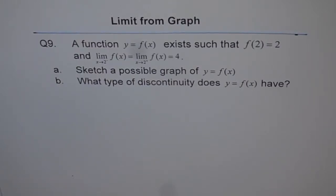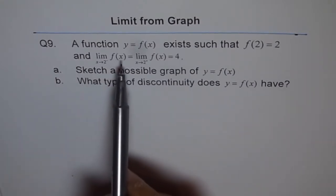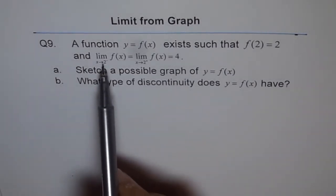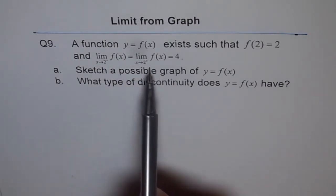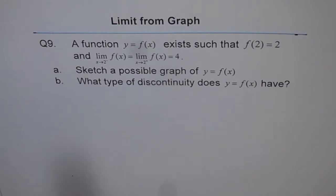Limit from graph. Question 9. A function y equals f of x exists such that f of 2 equals 2 and limit of the function when x approaches 2 minus, that means from the left side, is equal to the limit of the function when x approaches 2 from the plus side and the limit is 4. Sketch a possible graph of y equals f of x. What type of discontinuity does y of f of x have?